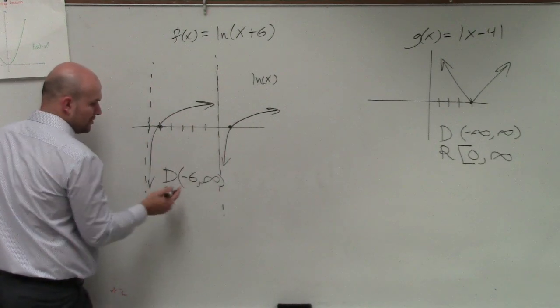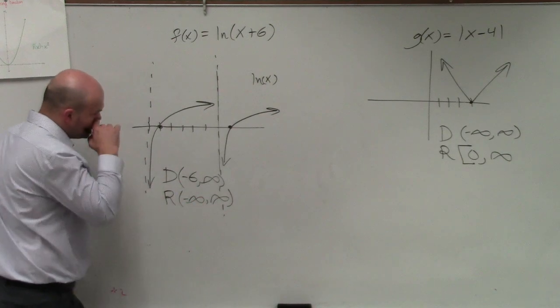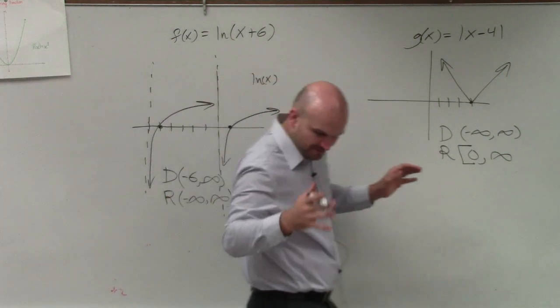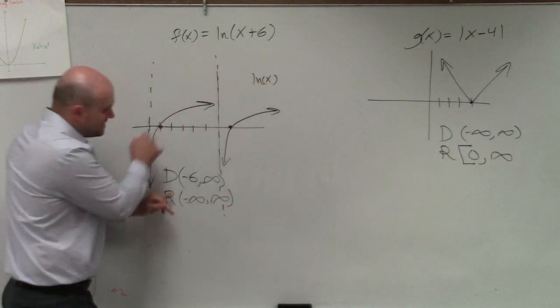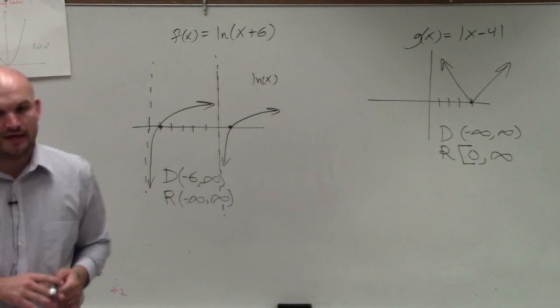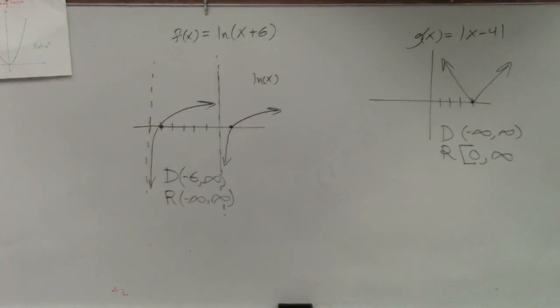And your range is how low it goes, which is negative infinity to infinity. So please understand the difference between when it's a point on the graph and when it's not a point on the graph. You're not going to have a point on the graph when it's infinity or when it's a discontinuity.